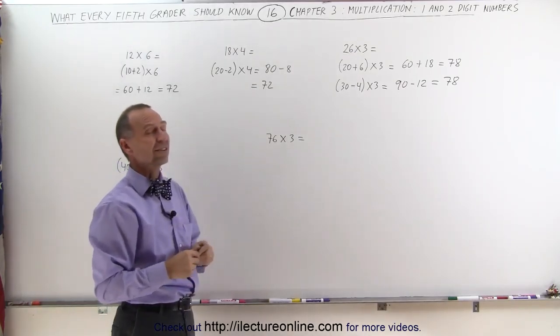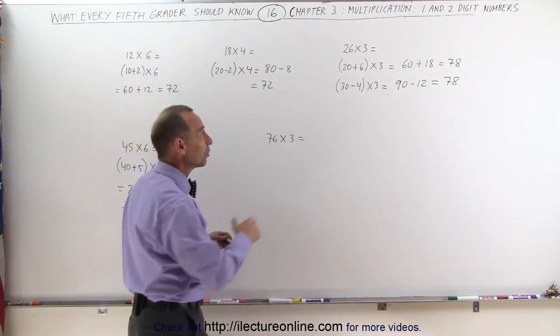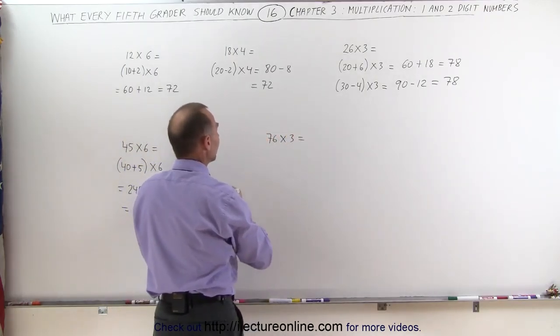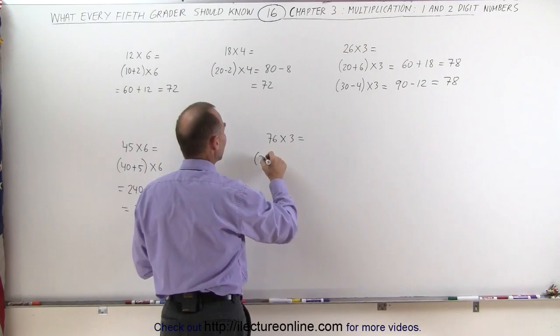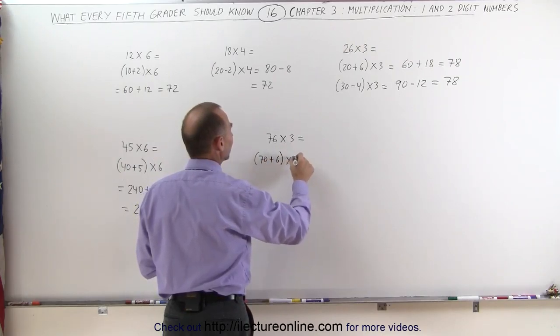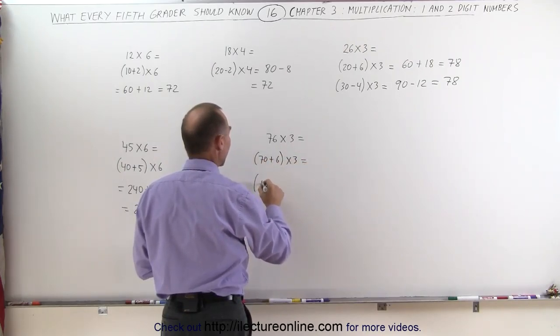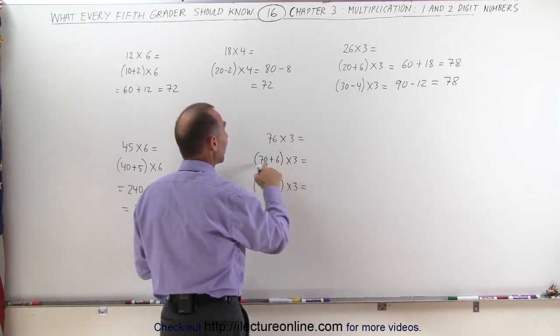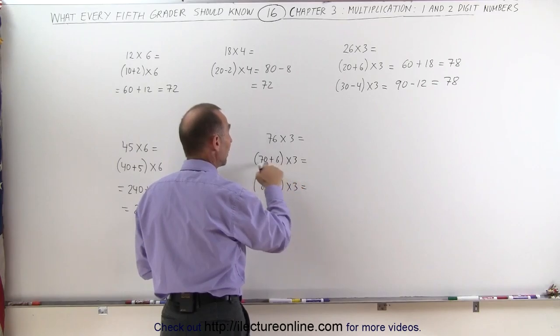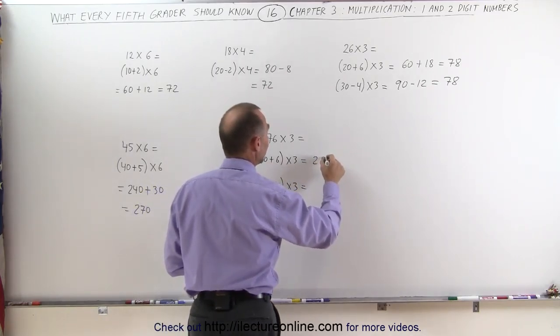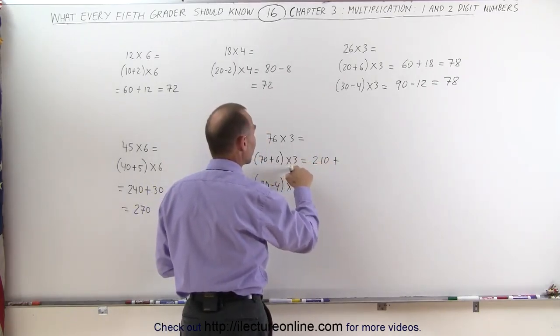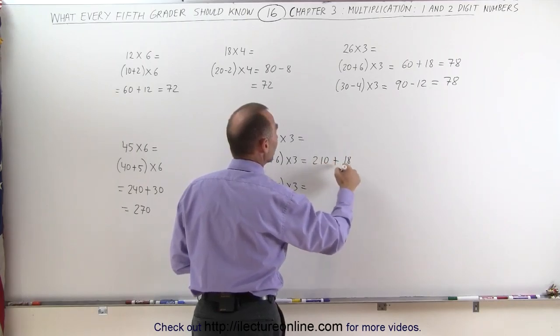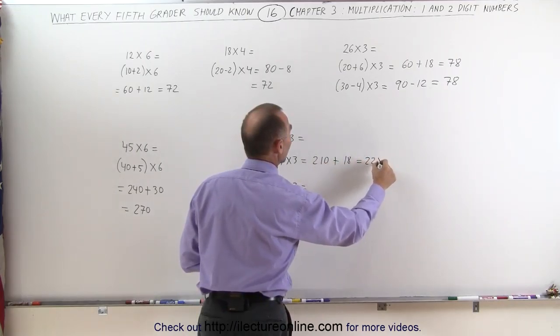And finally, when I look at 76 times 3, you can do it like 26 times 3. You can think of it as either 70 plus 6 times 3, or 80 minus 4 times 3. For 70 times 3, think 7 times 3 is 21, then add a 0, that gives you 210. Plus 6 times 3 is 18. 210 plus 18 equals 228.